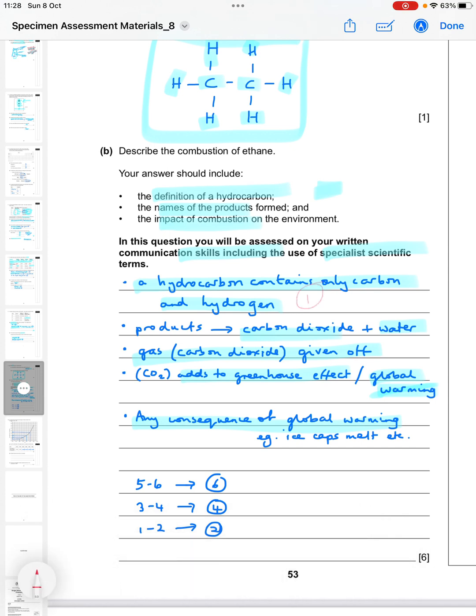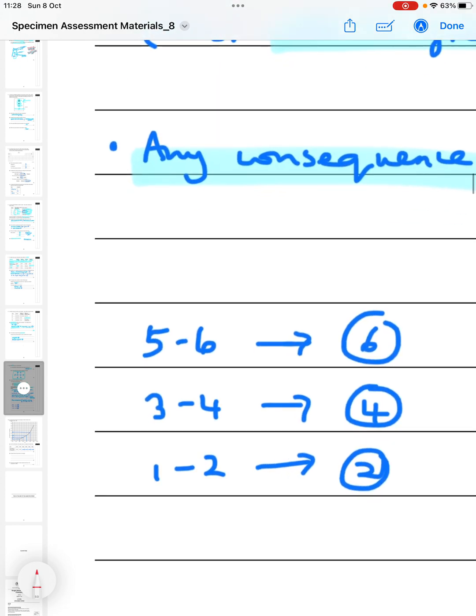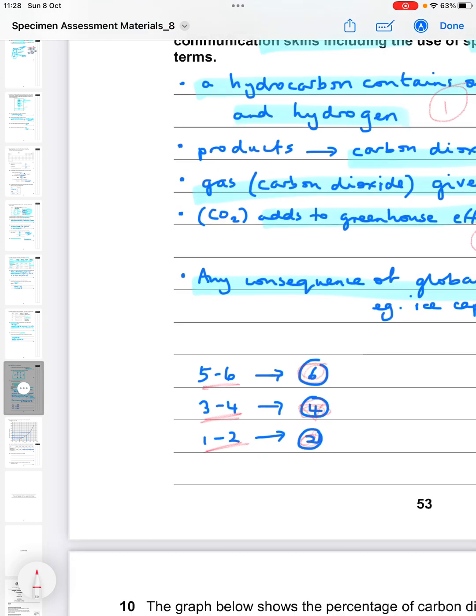The way this is marked: there'll be one mark for each of the points I'm indicating here - the definition of the hydrocarbon, then the two products, then the idea that the carbon dioxide is linked to the greenhouse effect and one other consequence. Five to six would put you into the six mark bracket if you're using clear English and a good structure. Three to four would get you into the four mark bracket, and one to two would put you into that two mark category.